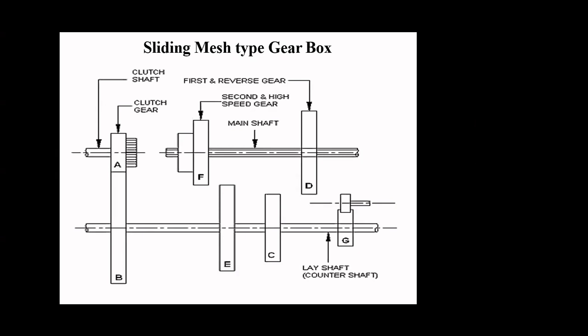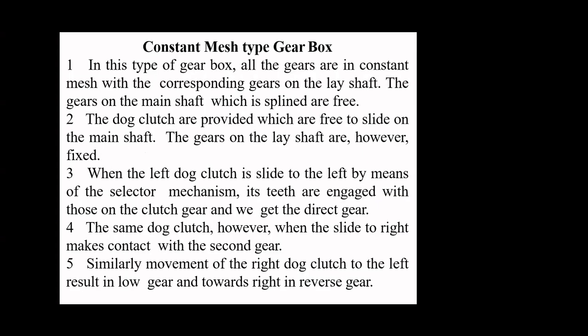There are three direct gears — first gear, second gear, and third gear — and one reverse gear in the sliding mesh gearbox. The third gear is referred to as top gear, which is used to increase the speed of the vehicle. This is how the sliding mesh gearbox operates, and in earlier vehicles this type of gearbox was incorporated.